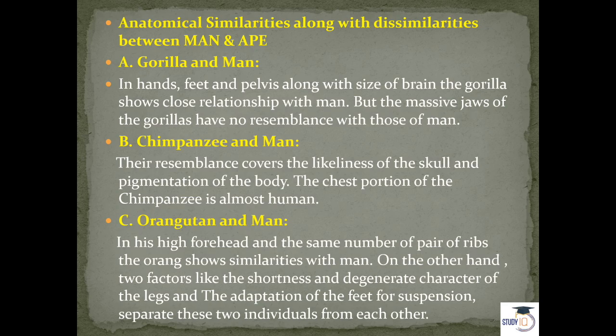Chimpanzee and man show a great deal of resemblance. Based on the skull and the chest — chimpanzee's chest closely resembles the human chest — the skull and chest are the two main features on the basis of which chimpanzee is most closely related to humans. Orangutan and man share similarity in the number of pairs of ribs, which is the same, but they differ in body size — orangutan has a short stature — and in the adaptation of feet for suspension.